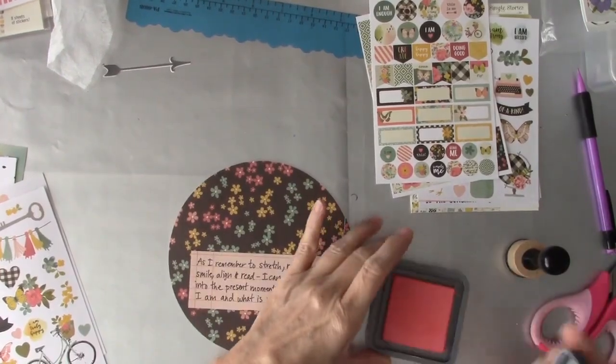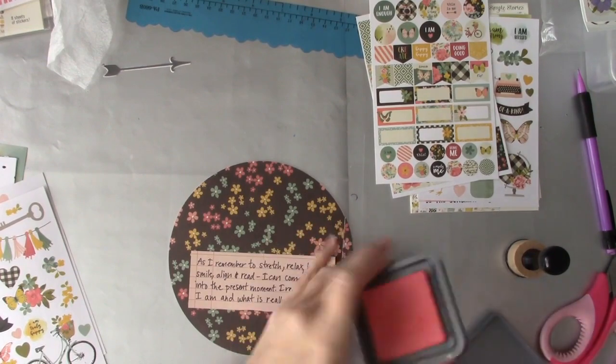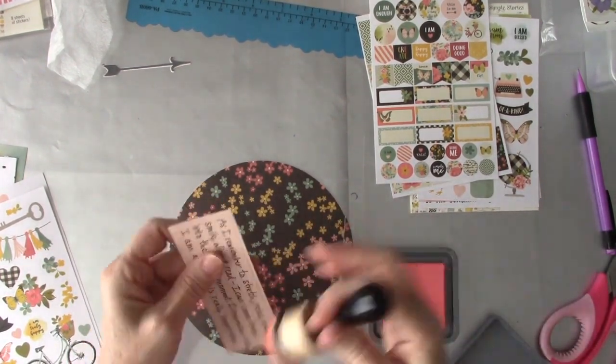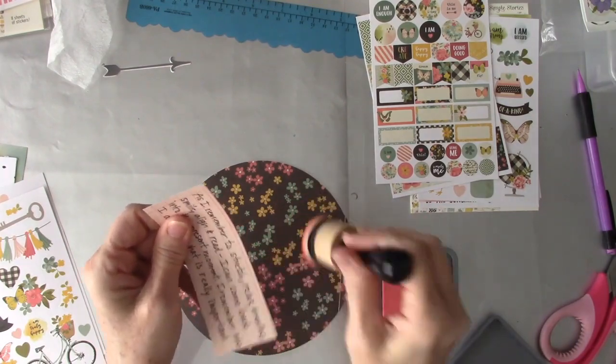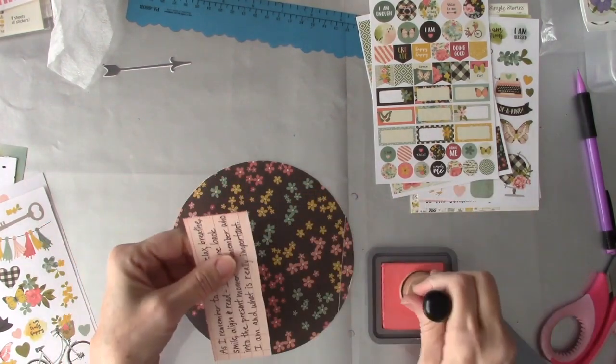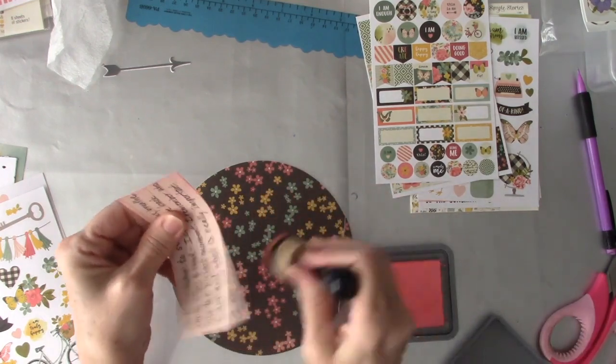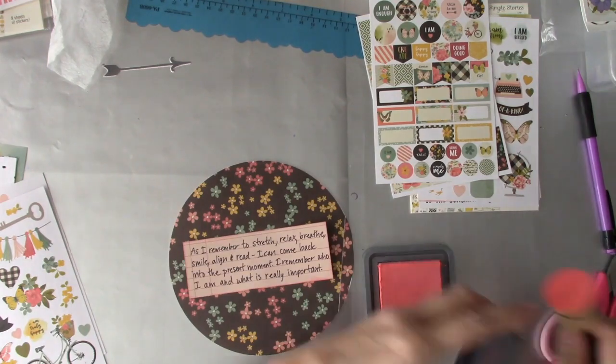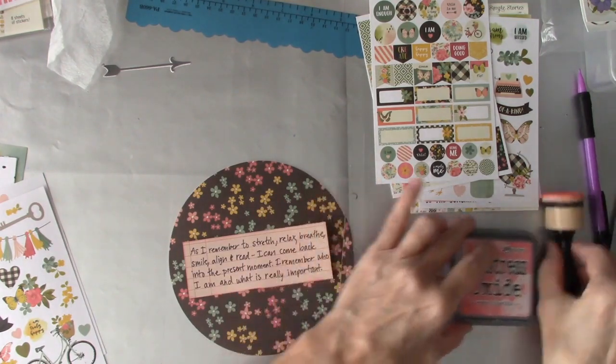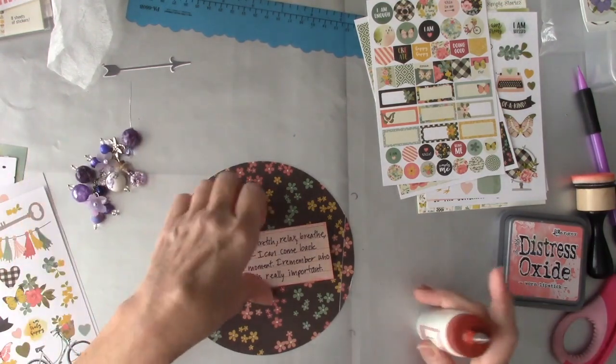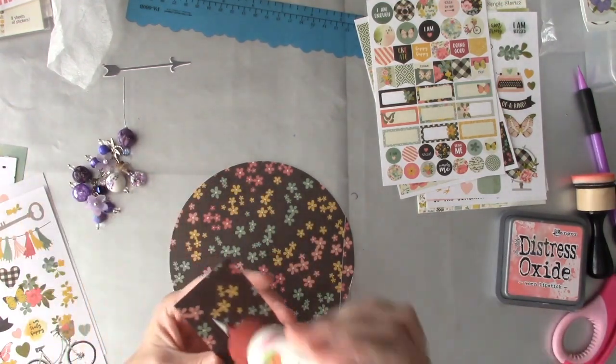Now that I've got my journaling done, I am just going to distress the edges of this paper with some worn lipstick just to kind of give it a little more definition against this background. And I'll just add a few cute stickers and this one is done.